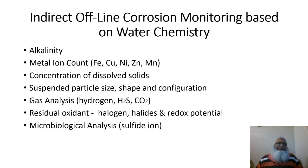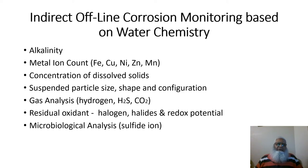Indirect offline corrosion monitoring based on water chemistry monitors parameters including alkalinity, metal ion count (iron, copper, nickel, zinc, or manganese), concentration of dissolved solids, suspended particles and their shape, size, and configuration, gas analysis such as hydrogen, hydrogen sulfide, and carbon dioxide, and residual oxidants such as halogens, halides, and redox potential.